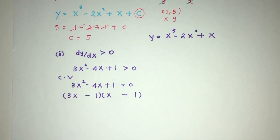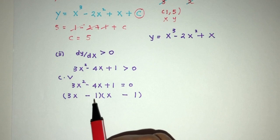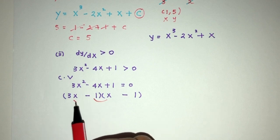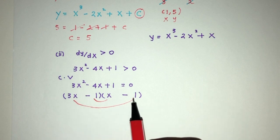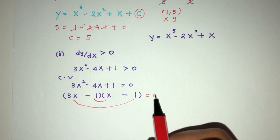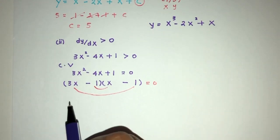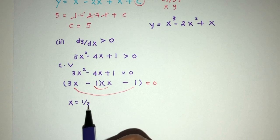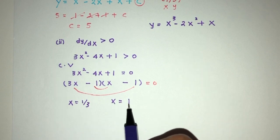This will become 3x times x and 1 is simply 1 times 1. We need minus 4. So we have to have minus 3 and then minus 1. So this is how we multiply the brackets. This will multiply with this and this will multiply with this. So 3x times minus 1 is minus 3x. And then minus 1, that will be minus 4. So that will be the factorization of this. So x will be 1 over 3 and x will be the value of 1.